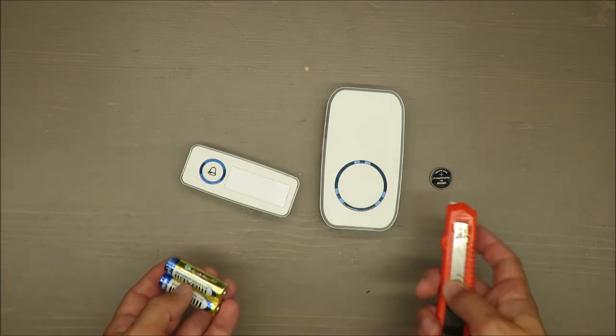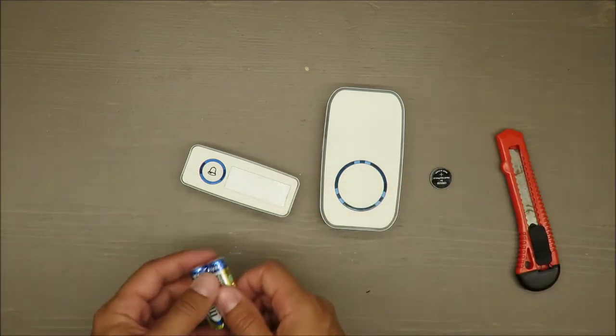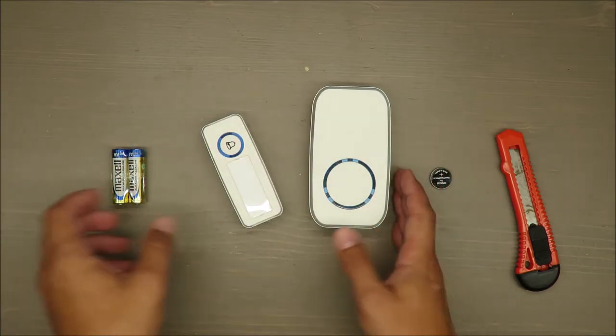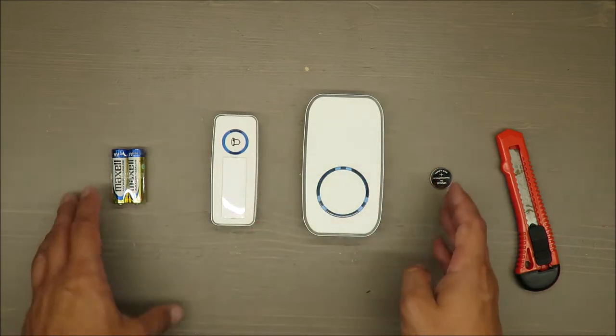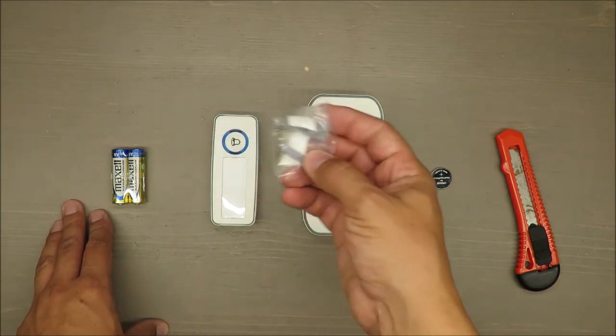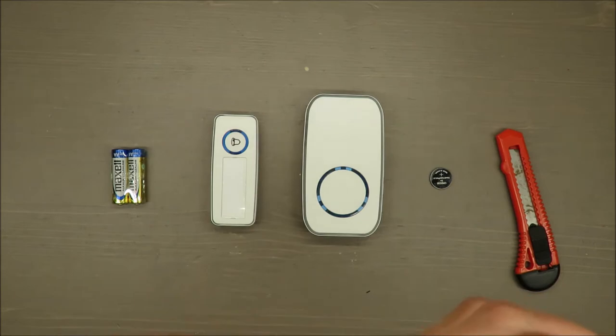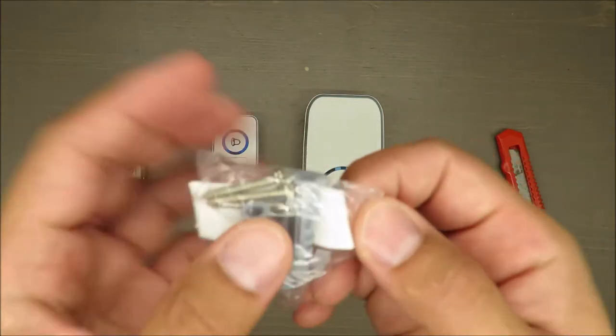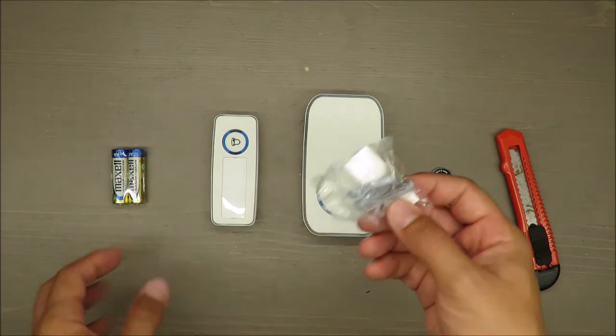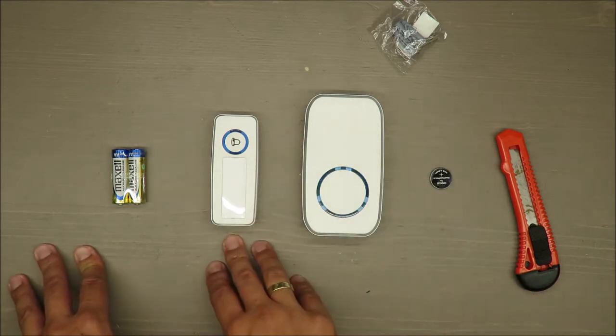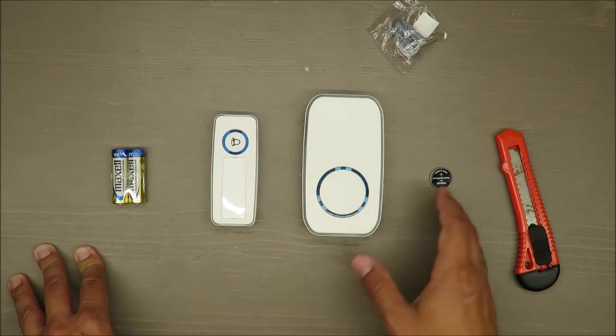First of all, what you are paying for is a wireless doorbell. Batteries are included together with some screws if you want to mount it to a wall, and there's also double-sided tape. This is the package you're paying for. It has three signal options: acoustic, visual, and acoustic plus visual, so there should be some light flashing.